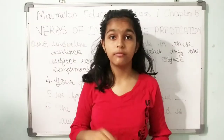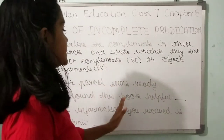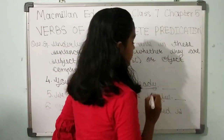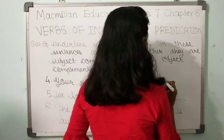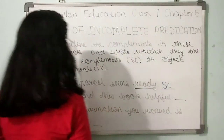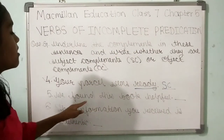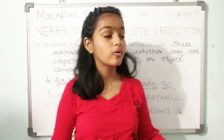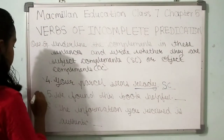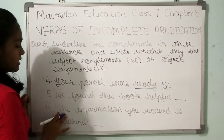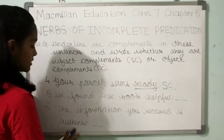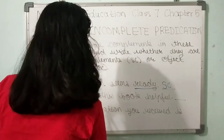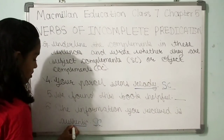Question four: 'Your parcel seems ready.' Here, 'ready' is the complement and it is a subject complement (SC). Question five: 'We found this book helpful.' — this is a homework question for you to answer in the comments. Question six: 'The information you received is authentic.' Here, 'authentic' is the complement and it is a subject complement (SC).